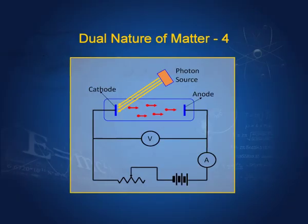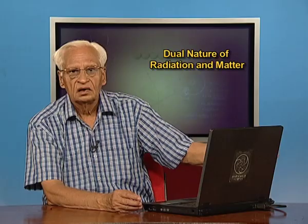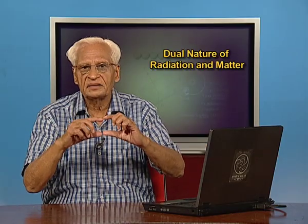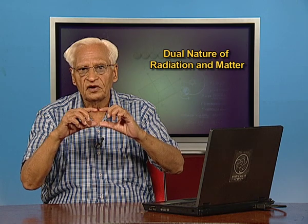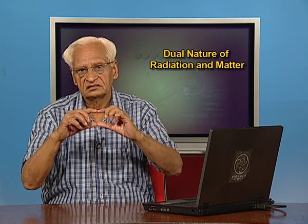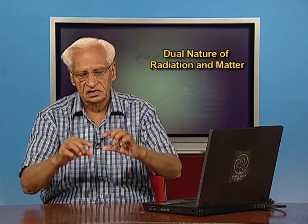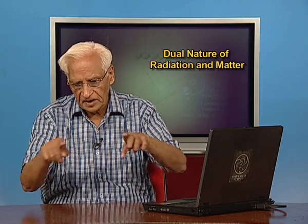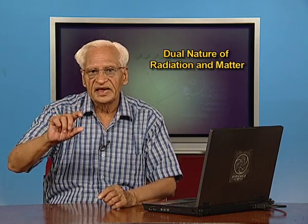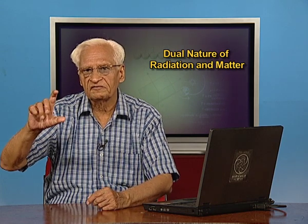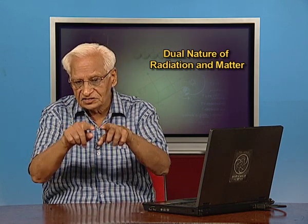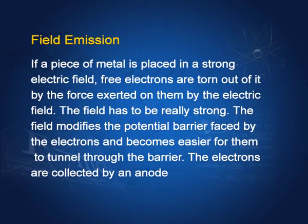Now we continue from that point onwards. Energy can also be given to free electrons in the form of an electrostatic field. If a piece of metal is placed in a very strong electrostatic field, the free electrons experience the force of this field, gain energy, and can come out. This is known as field emission.